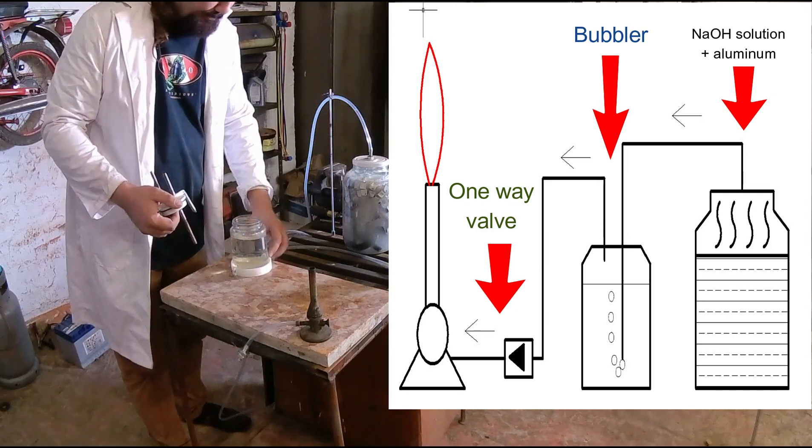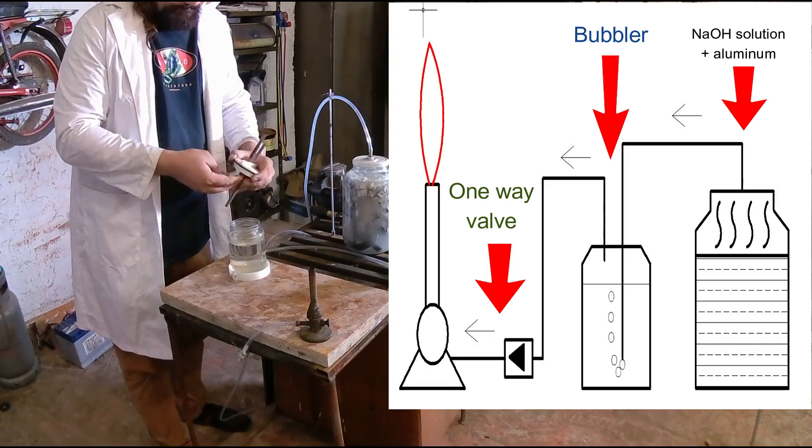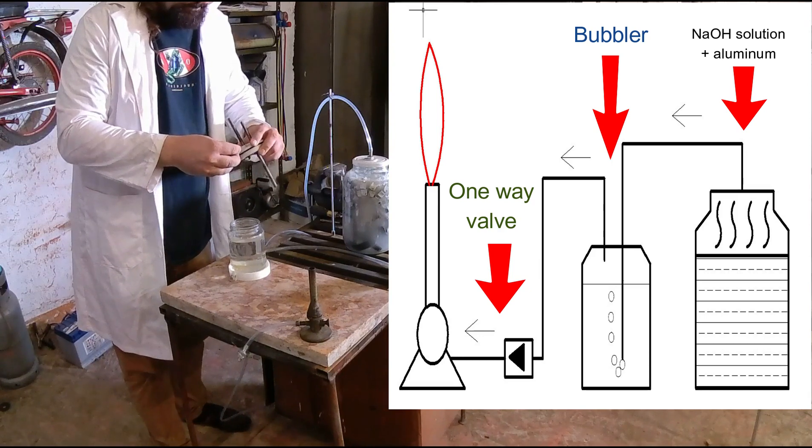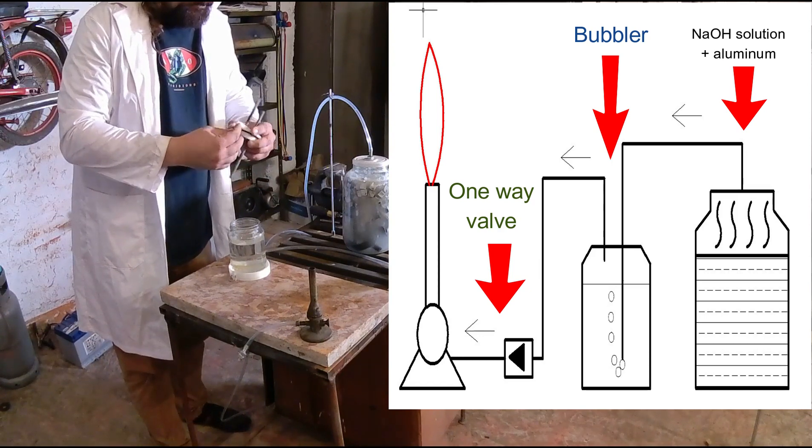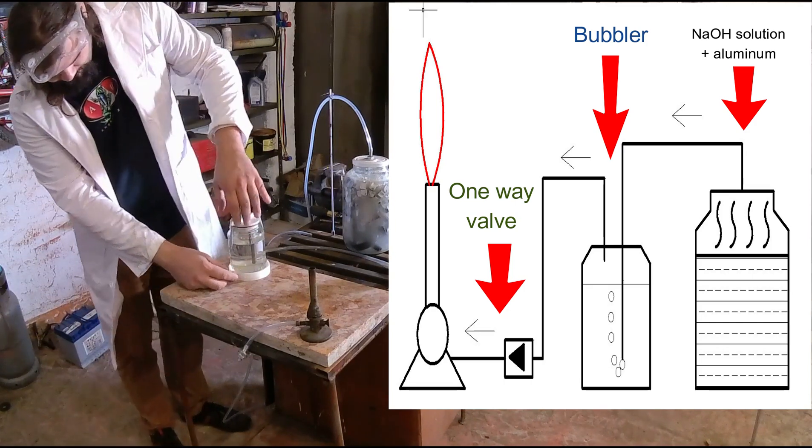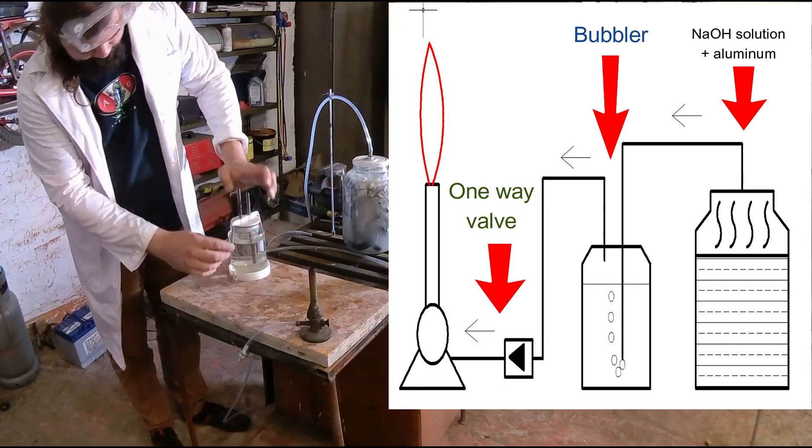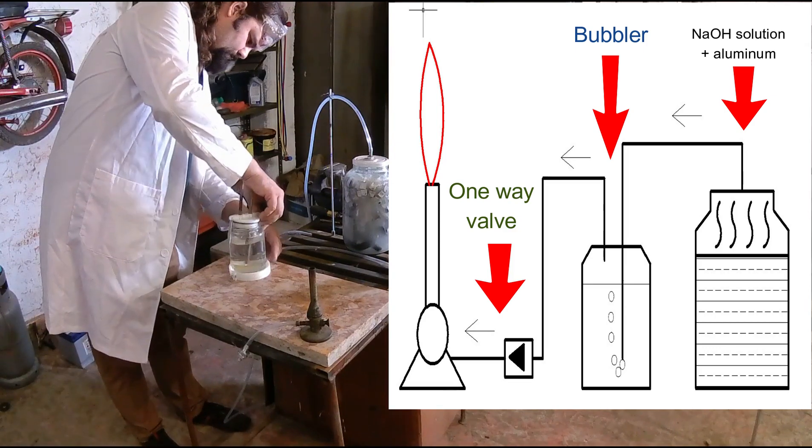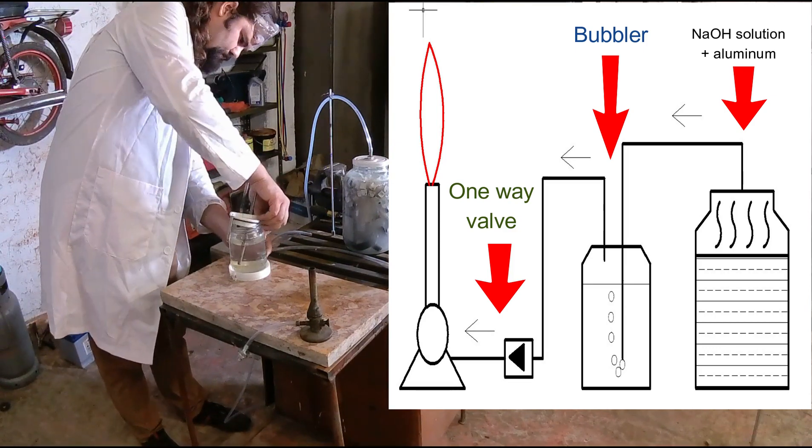And last you have a one-way valve that is connected to a Bunsen burner, a type of burner that is used in chemical laboratories. The one-way valve acts as a main protection device in case you have an explosion or a small flash. It will prevent, it will hopefully prevent, hydrogen going back to the bubbler and the rest of the setup.